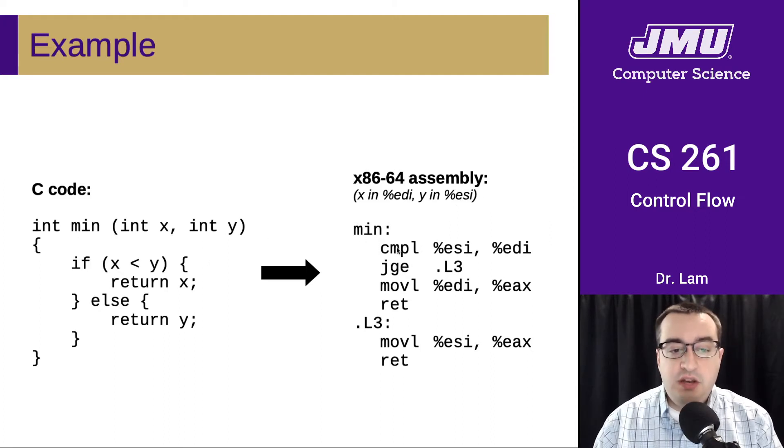We have the min function, which begins at this label here. We need to do this comparison here, where we're comparing x with y. But remember that when we encode this, we need to encode it in reverse. So this is y and this is x. This is the comparison part right here.